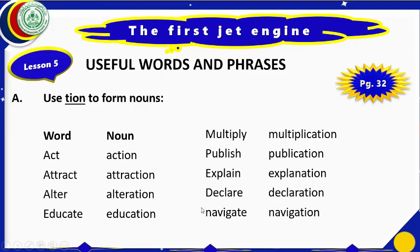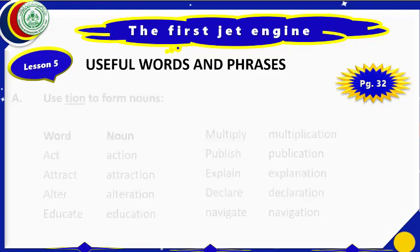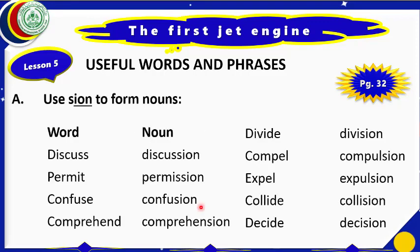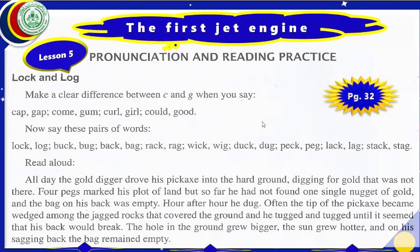We have done Exercise A adding -TION. In Exercise B, we add S-I-O-N. These words become: discuss → discussion, permit → permission, confuse → confusion, comprehend → comprehension, divide → division, compel → compulsion, expel → expulsion, collide → collision, decide → decision. We have done this exercise. Let us move to the next.